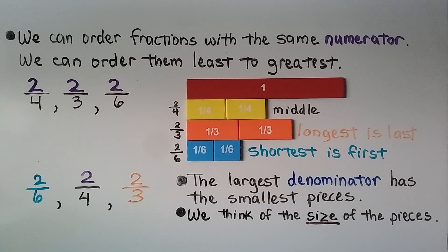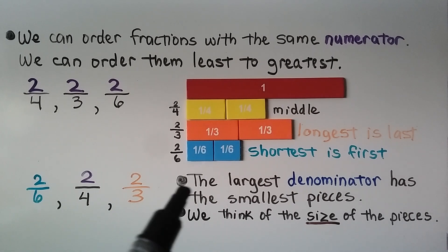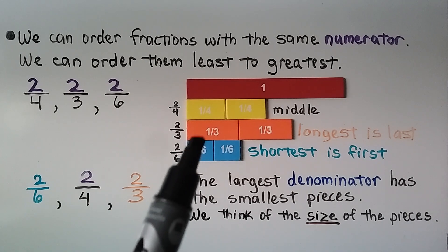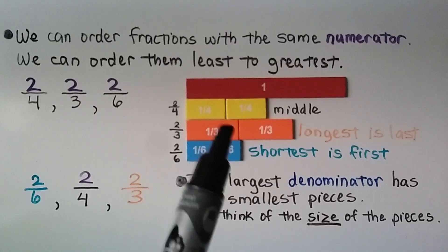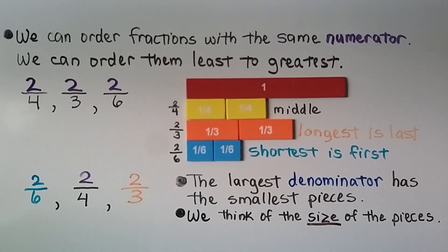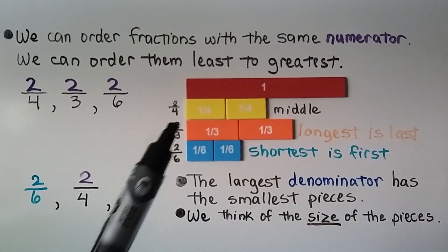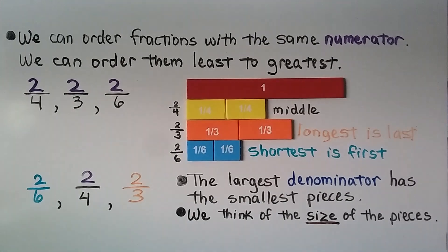The largest denominator has the smallest pieces — we think of the size of the pieces. Look at how this orange one-third is much bigger than that one-sixth, and it's bigger than the one-fourth unit fraction.